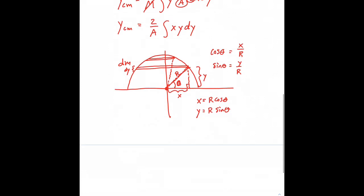So we can make some substitutions into our equation in order to get a calculus of a single variable. So let's express this in terms of the variable theta. y_cm is 2 over A times the integral of x, x is r cosine theta, then multiply by y. y is r sine theta.